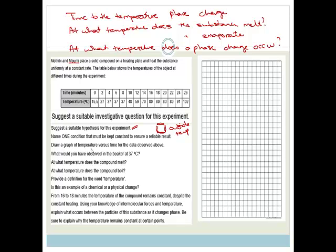Then it says draw a graph of temperature versus time for the data observed. So the time is going to be on our x-axis. So let's do just a count. It's 1, 2, 3, 4, 5, 6, 7, 8, 9, 10, 11, 12, 13. We're going to do 2 minutes for every one of these blocks. So we've got 0, 2, 4, 6, 8, 10, 12, 14, 16, 18, 20, 22, 24, and 26.